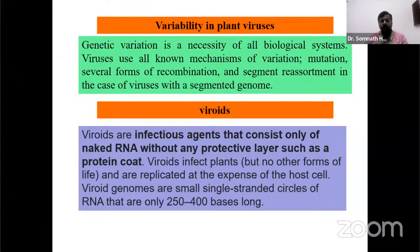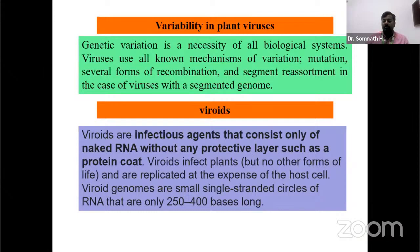Viroids are infectious agents consisting only of naked RNA without any protective layer such as a protein coat. Viroids infect plants and are replicated at the expense of host cell machinery. Their genomes are small single-stranded circular RNA molecules of only about 400 bases — the smallest known pathogens, smaller than viruses. Diseases caused by viroids include potato spindle tuber viroid.